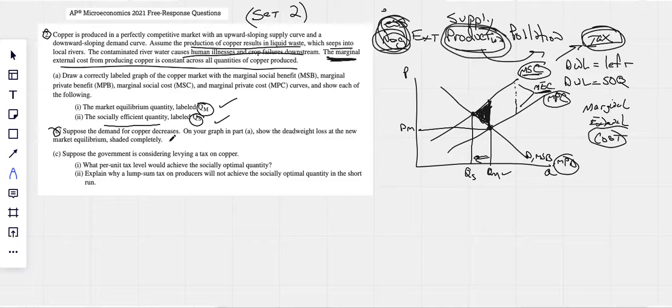Suppose the demand for copper decreases. On your graph in part A, show the deadweight loss and the new equilibrium shaded completely. All we have to know, and this is tricky, I don't think I've seen one like this before, but the idea here is that the demand curve shifts to the left. This now becomes our new MSB and MPB, where I know our MPC and our MPB again come together. That's the market, right there. Let's call it PM2. I know this is going to be QM2.